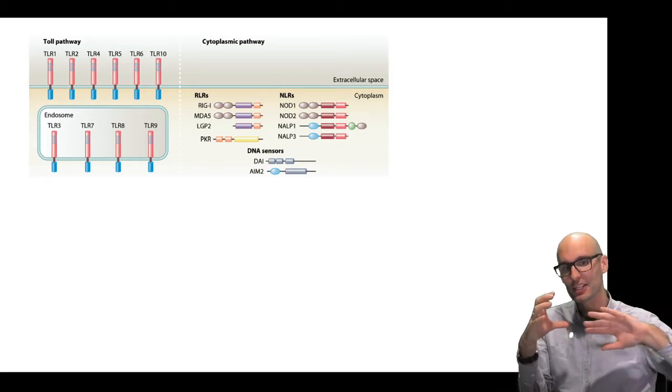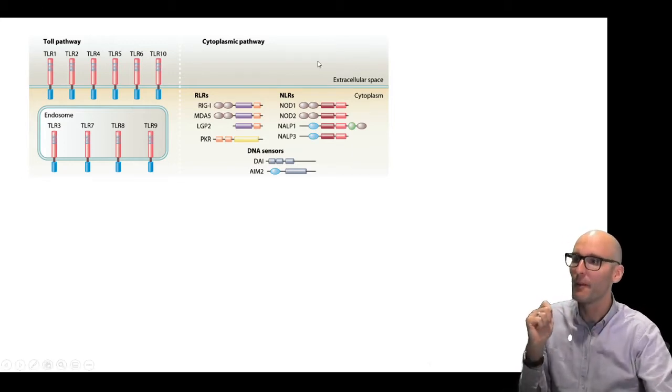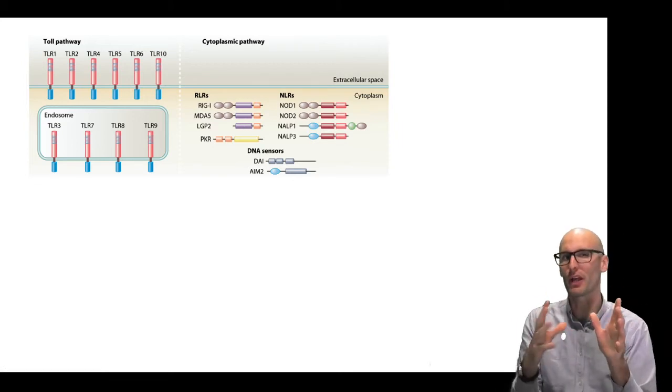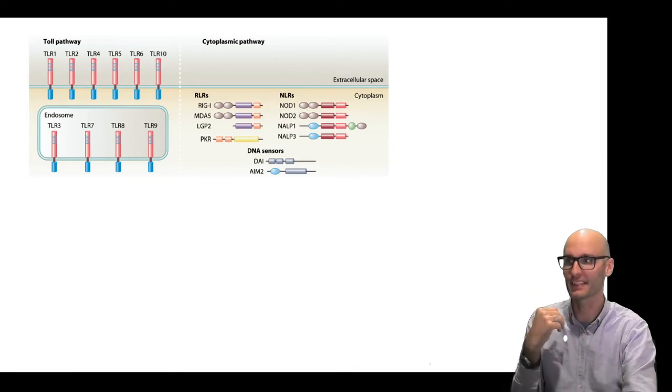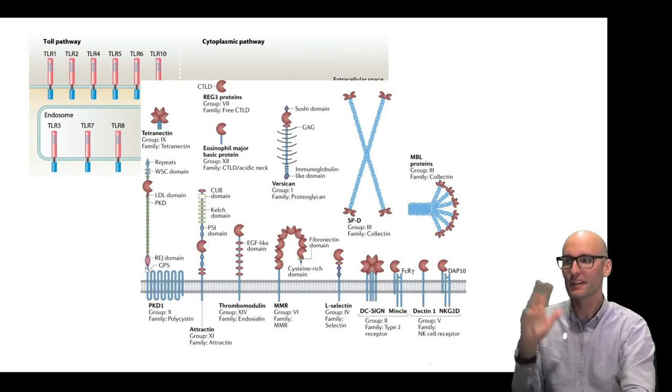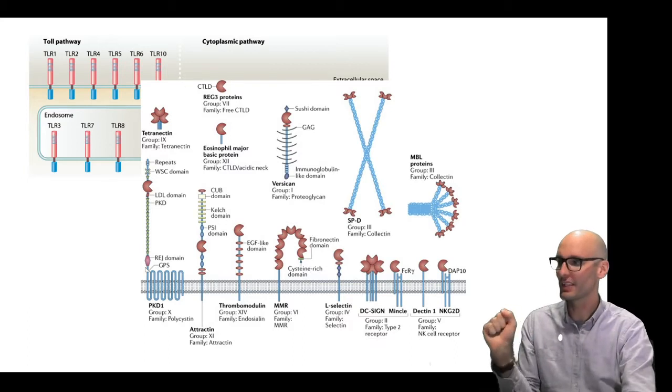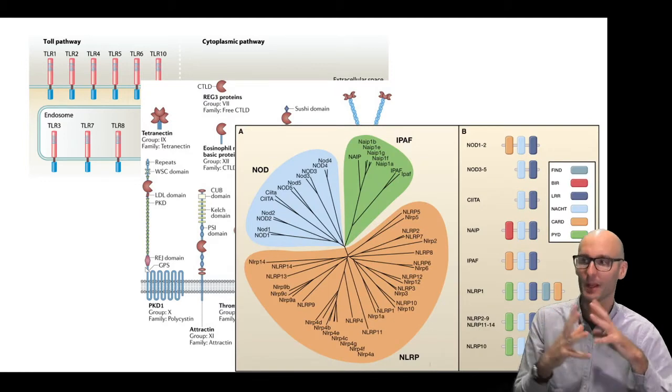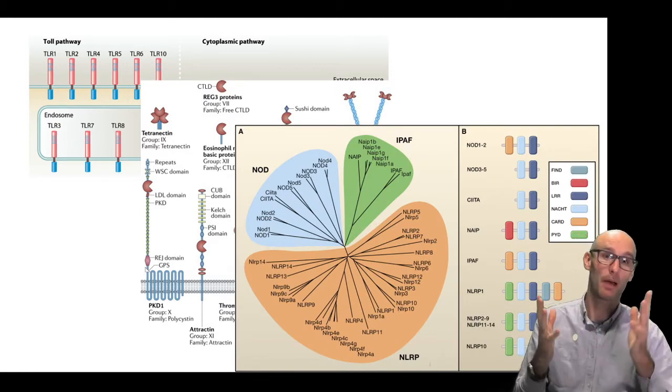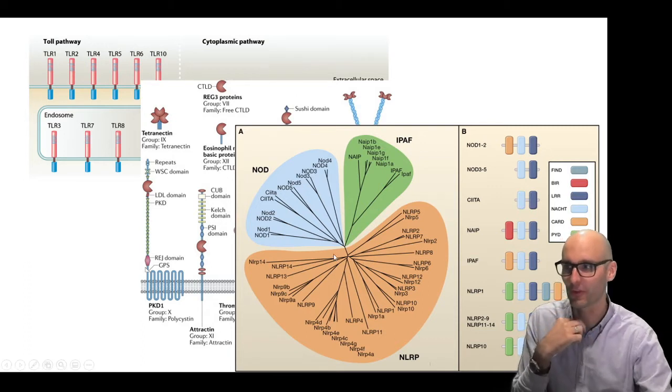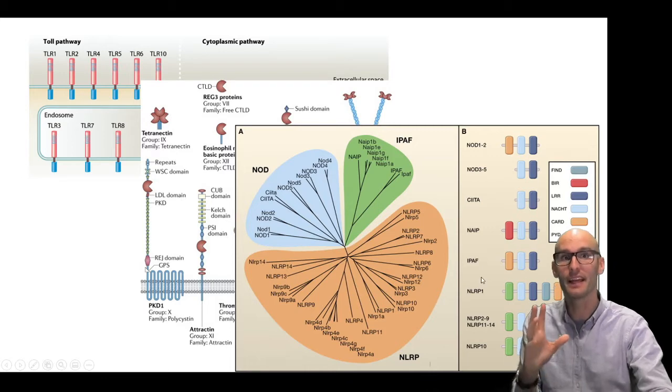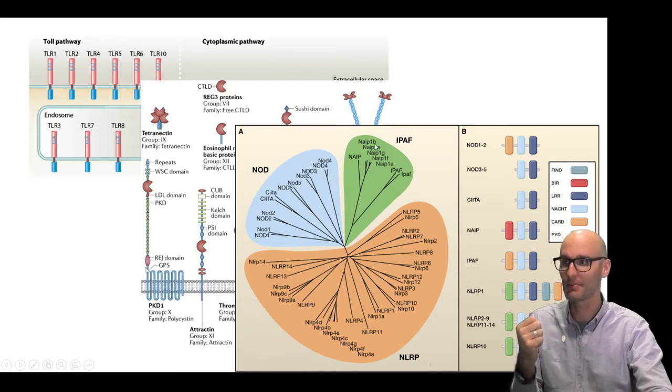There's also cytosolic receptors designed to detect anything peculiar going on in the cytosol of the cell, rather than just in the extracellular space. There are lectin receptors that mostly detect carbohydrates in the extracellular space, and there's a huge range of them. Then there are the inflammasome receptors, which are my favorite. There's a huge number of them. This is the evolutionary tree of them. There are dozens of these cytosolic receptors like NOD receptors, IPAF receptors, or NLRP receptors.